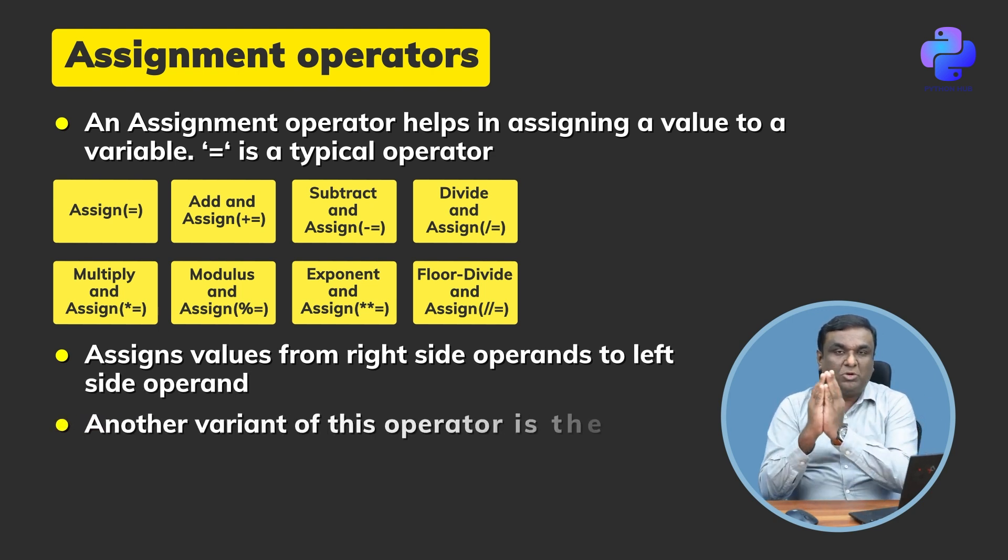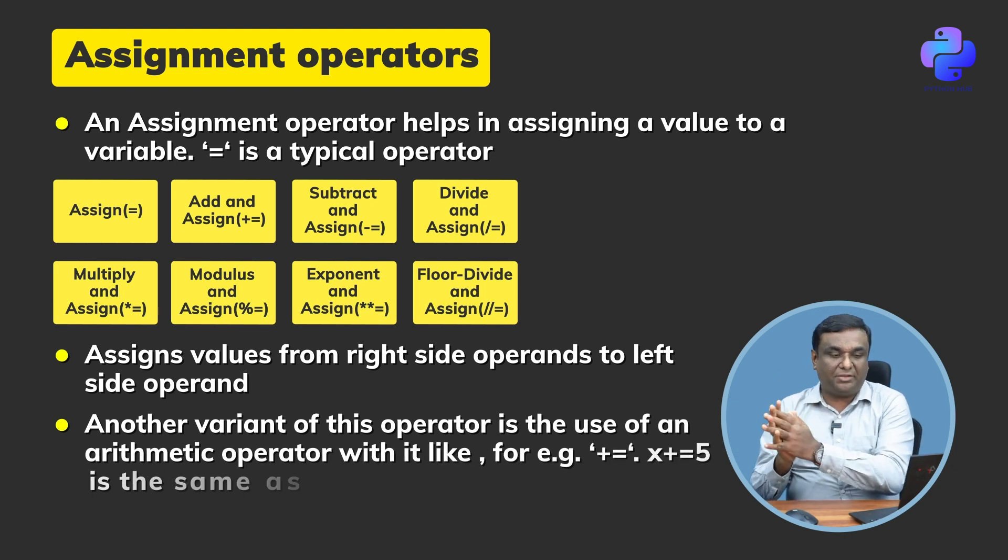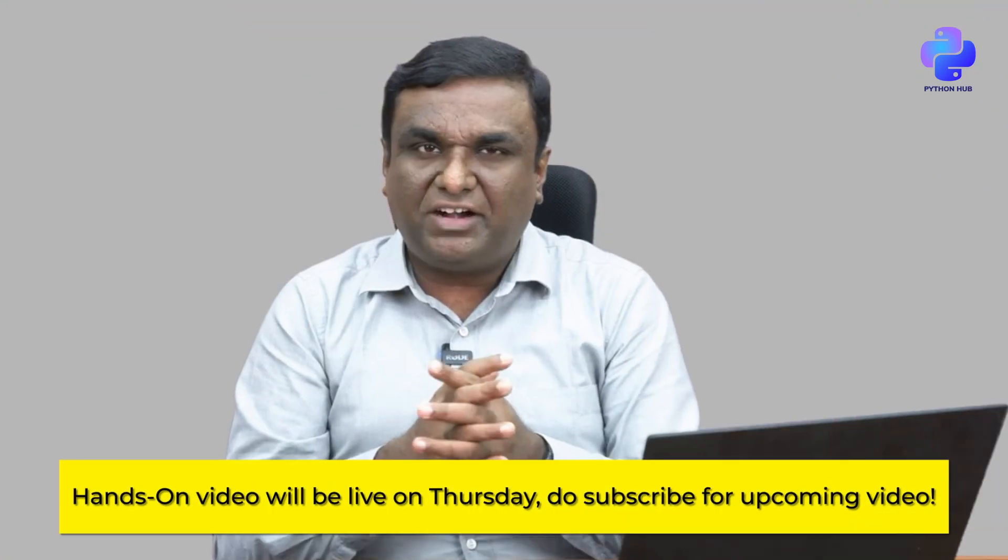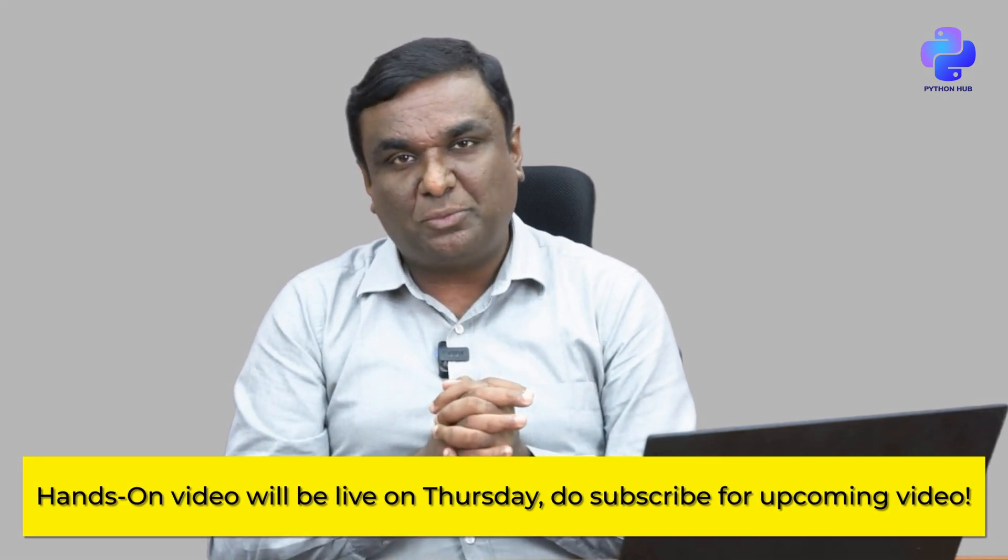As I mentioned, x += 5 means x = x + 5. That's why we call it a right side to left side operator. I hope you understand what arithmetic and assignment operators can do for you.